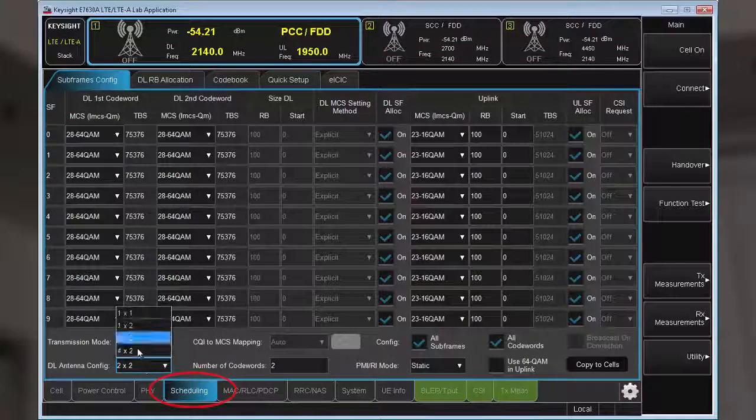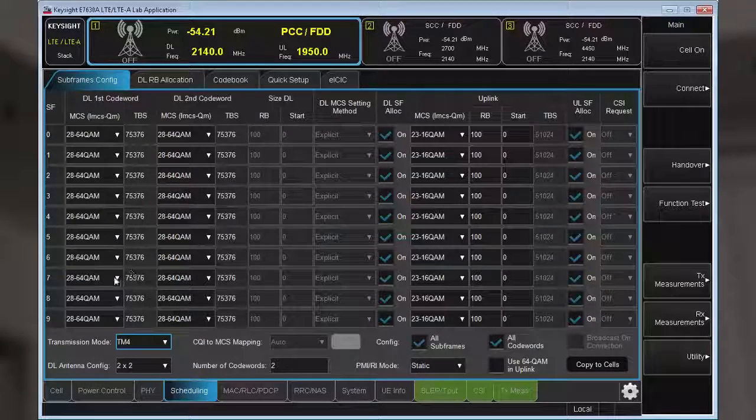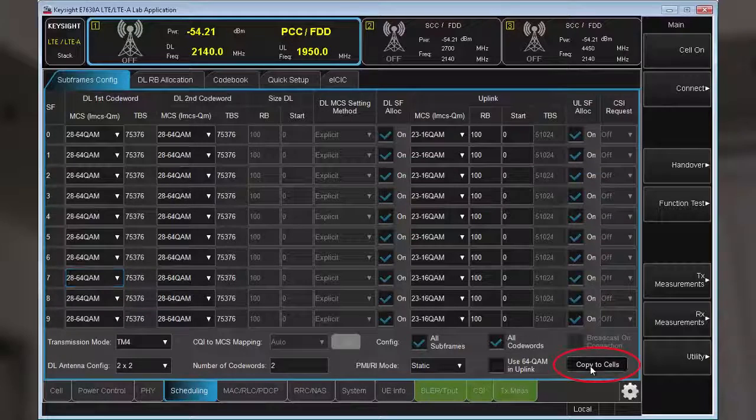On the scheduling tab of the primary cell, you can pick the MCS mode, MIMO, and test mode and easily apply these same settings to the second and third carriers with a single button click.